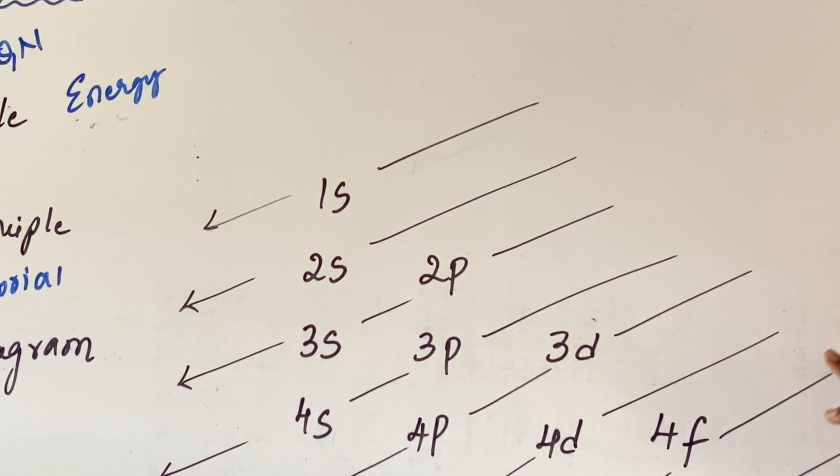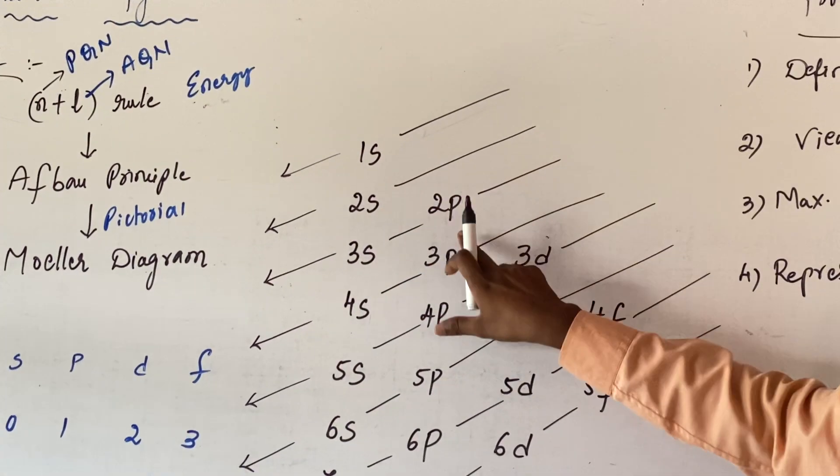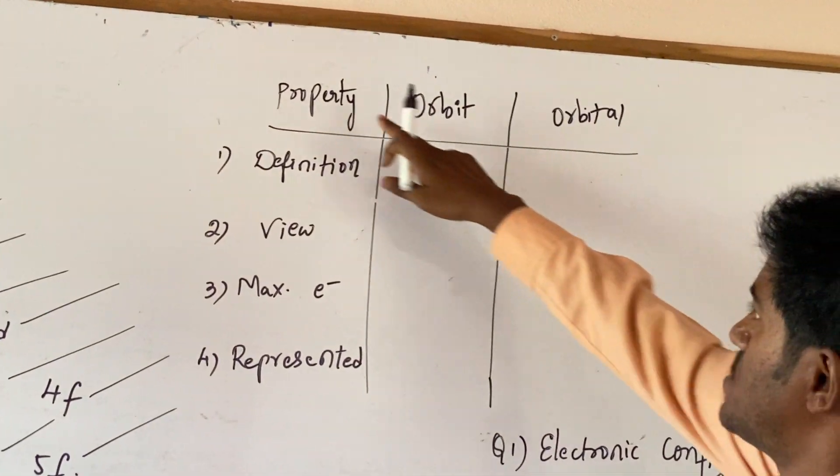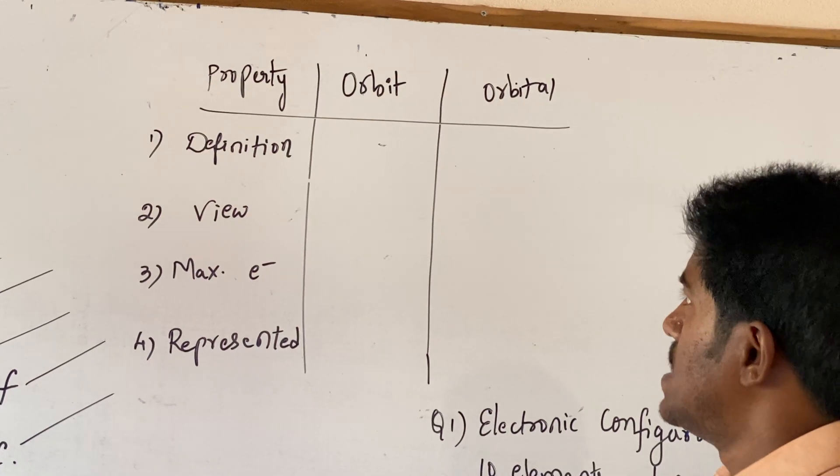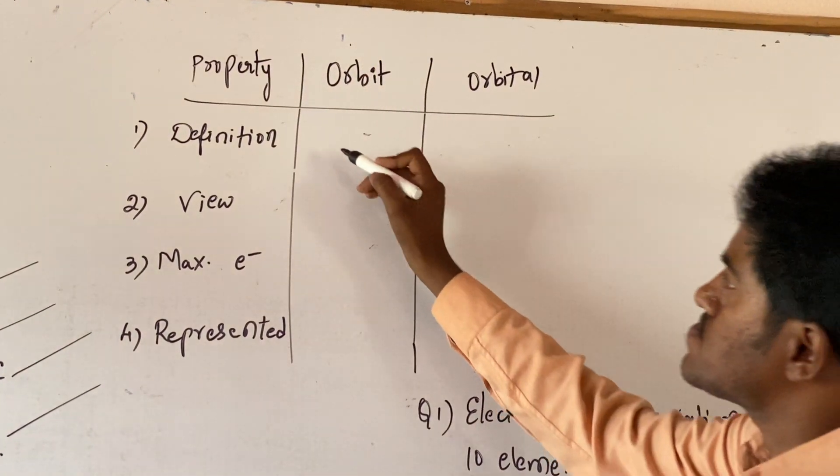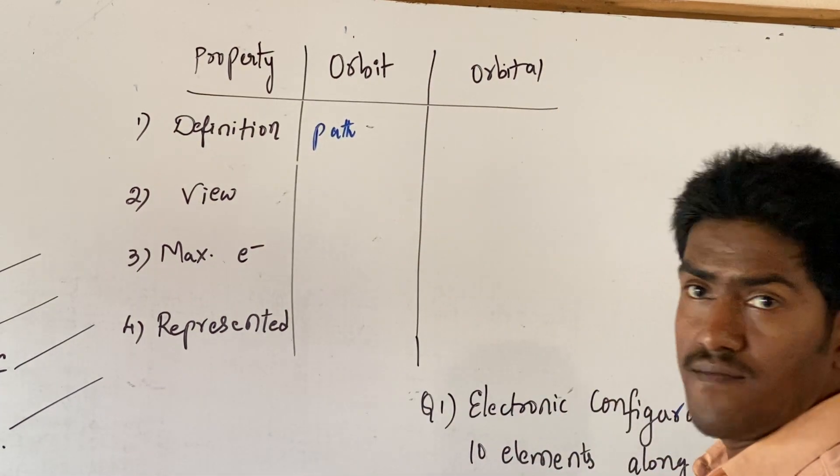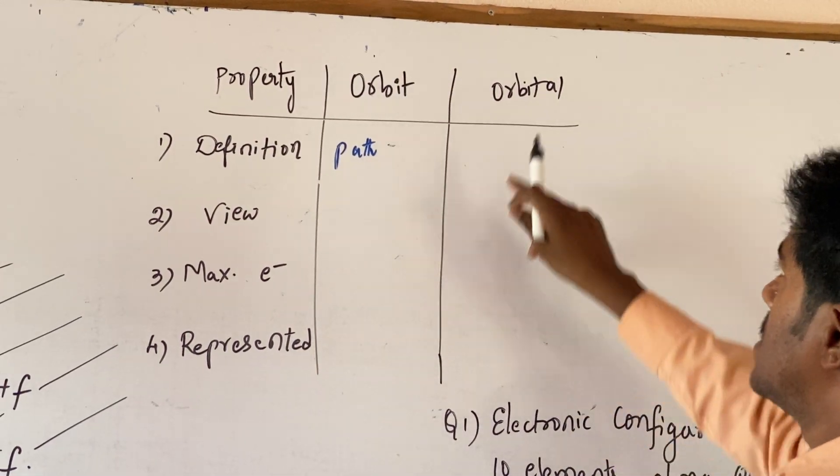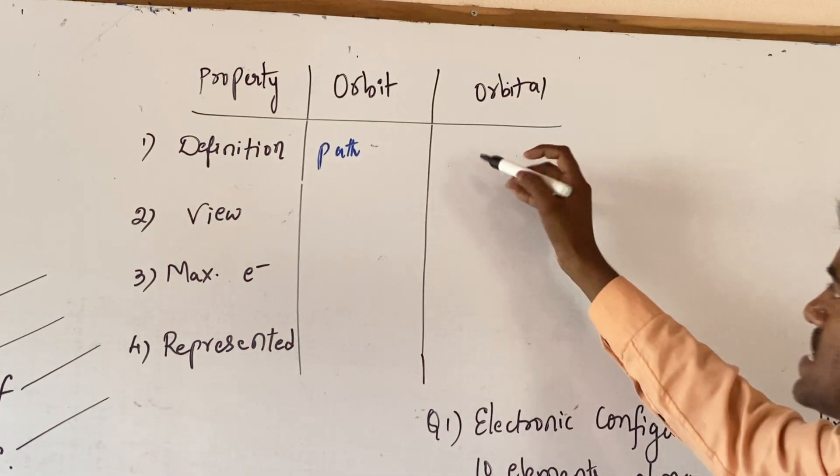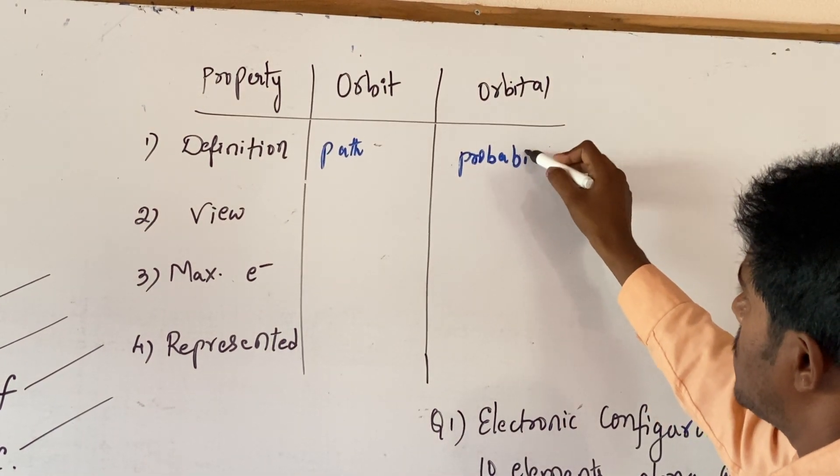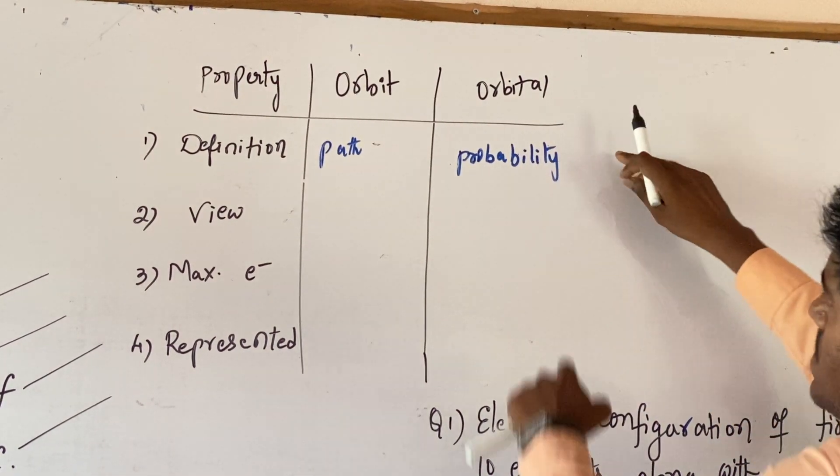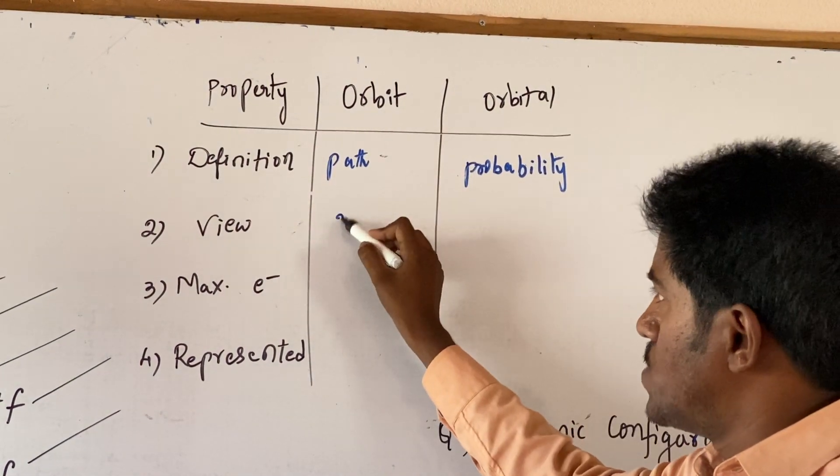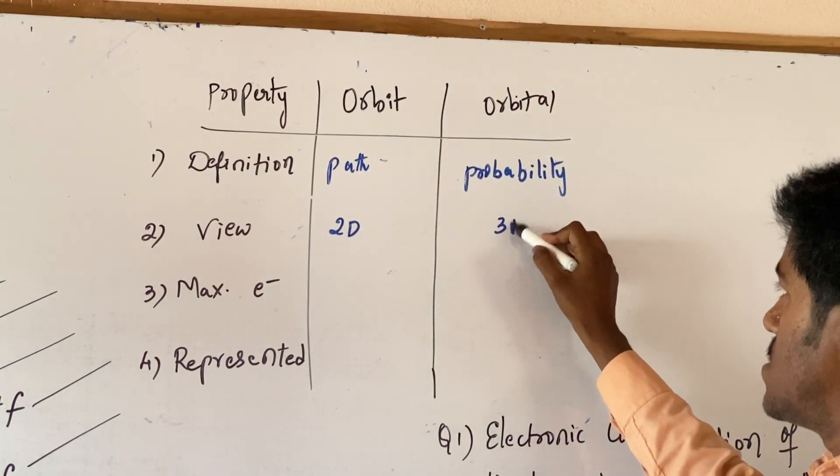First electron enters into 1s orbital. Now first of all what is the difference between the numbers and S, P, D, F. The differences between orbit and orbital based upon these properties. First of all, the definition of the orbit is: The path of the electron that revolving around the nucleus is known as orbit. And it is circular. Now here, orbital definition. The maximum probability of finding the electron around the nucleus is given as orbital. Now coming to the view. Orbit is 4 dimensional view. Orbital is 3 dimensional view.